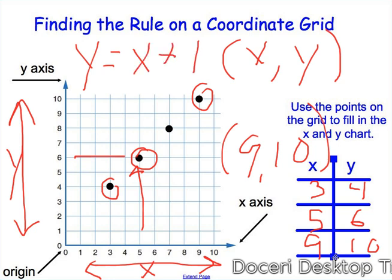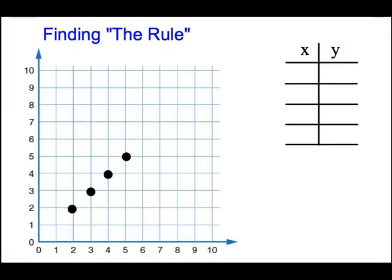We can go back and plug in any of these points into this equation, and it will equal Y equals X plus 1. So let's try it with 5 and 6. 5 plus 1 equals 6. And again, we can try it with our last point, or our last plot. 9 plus 1 equals 10.